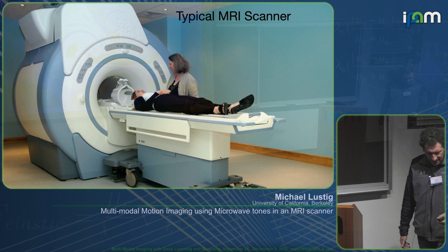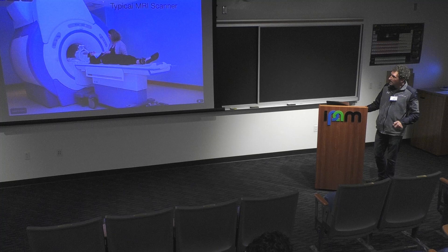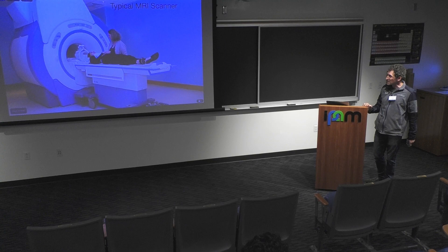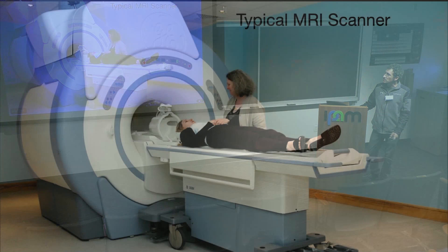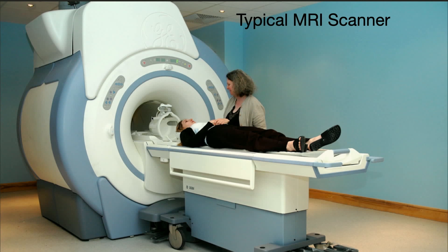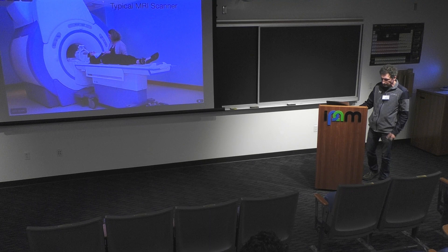I need to talk a little about MRI. This is a typical MRI scanner — a big magnet that is as high as three, sometimes seven Tesla. You have a subject inside the bore and image their body. What you're imaging is really just hydrogen atoms within the body, mostly from water. There's also a cage that you put your head inside — those are receiver coils that pick up radio frequency information, the NMR signal.